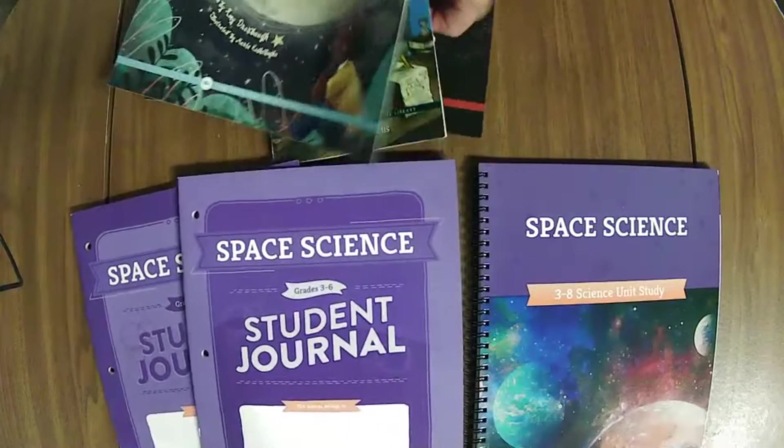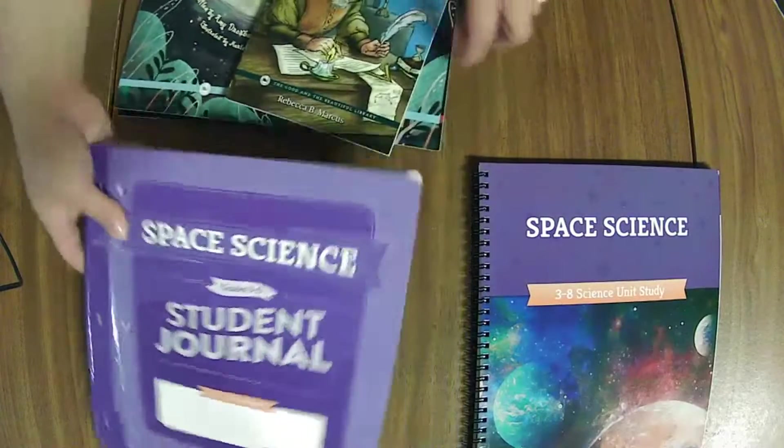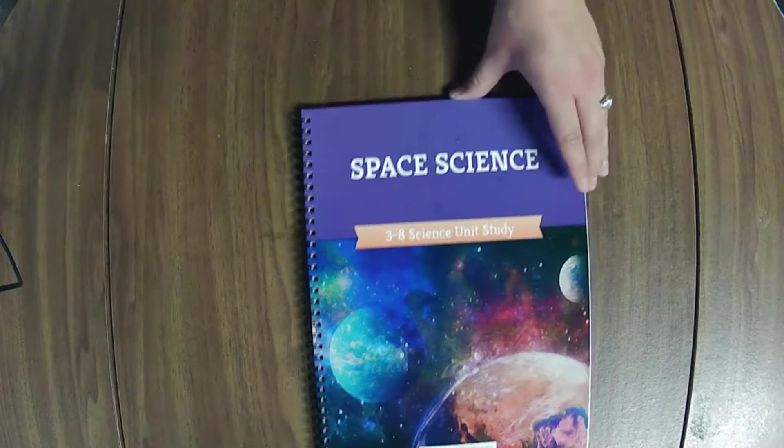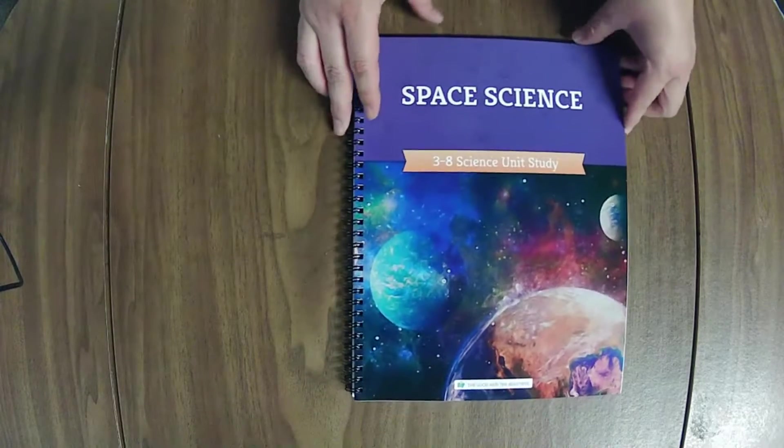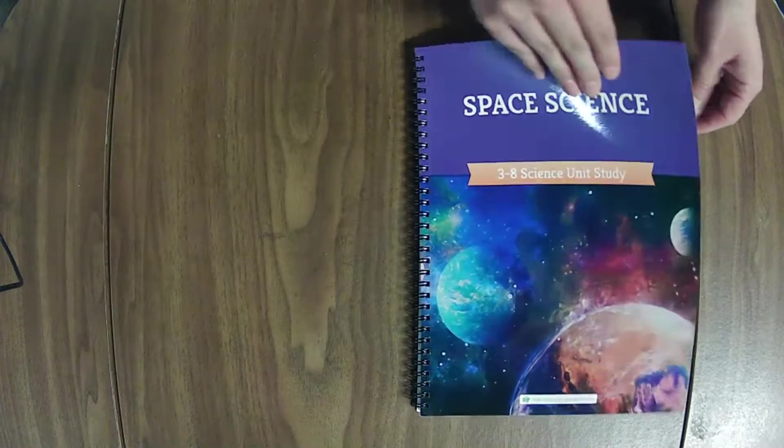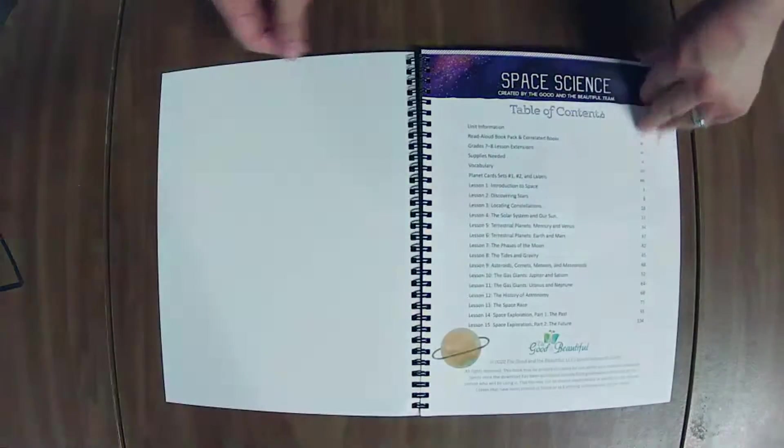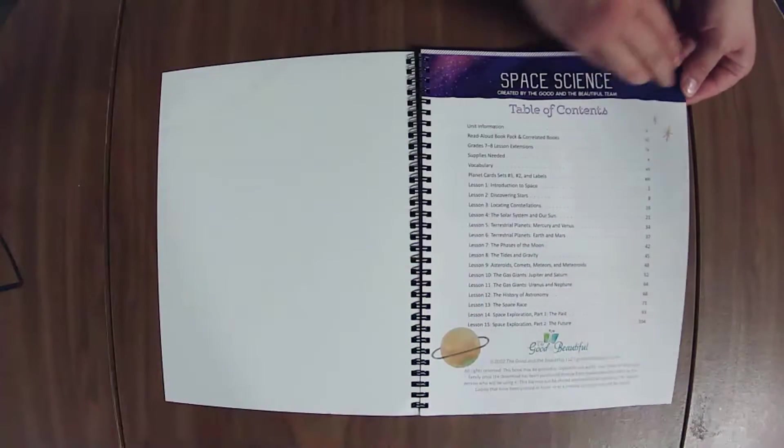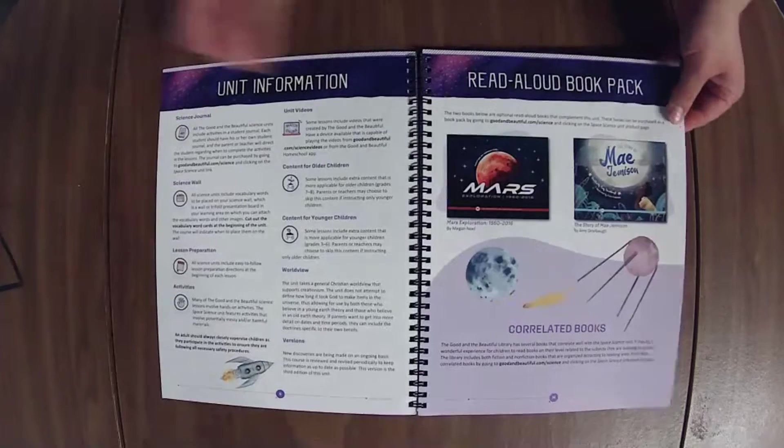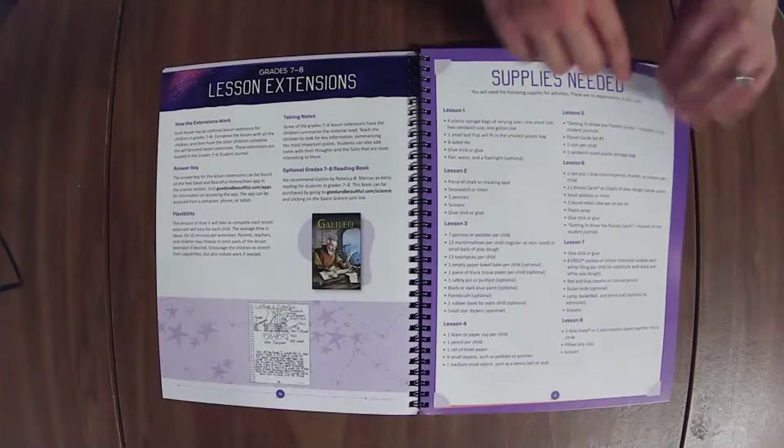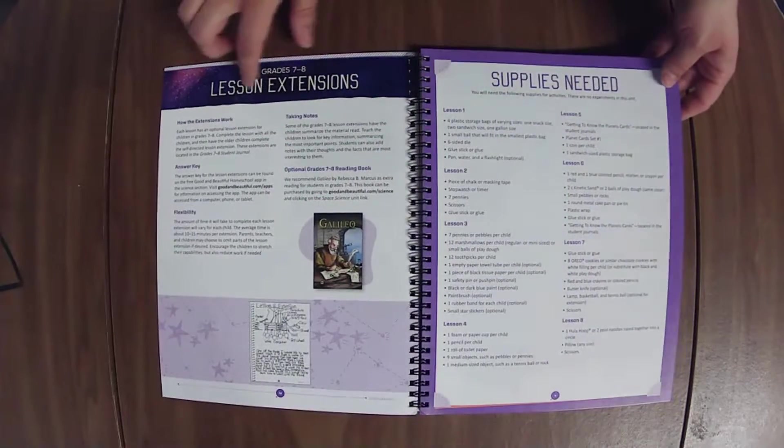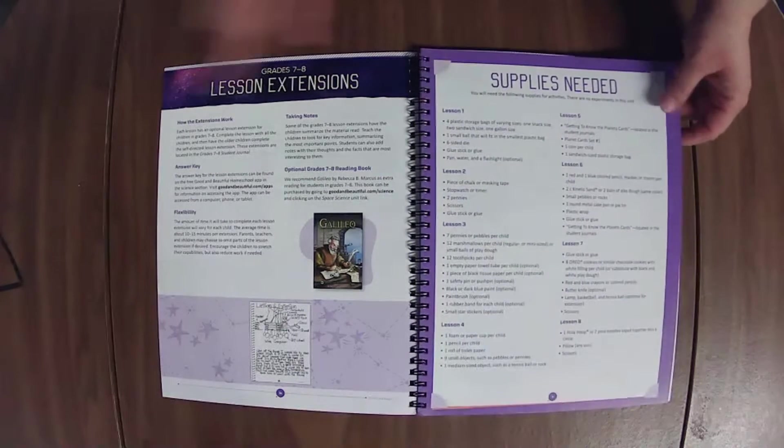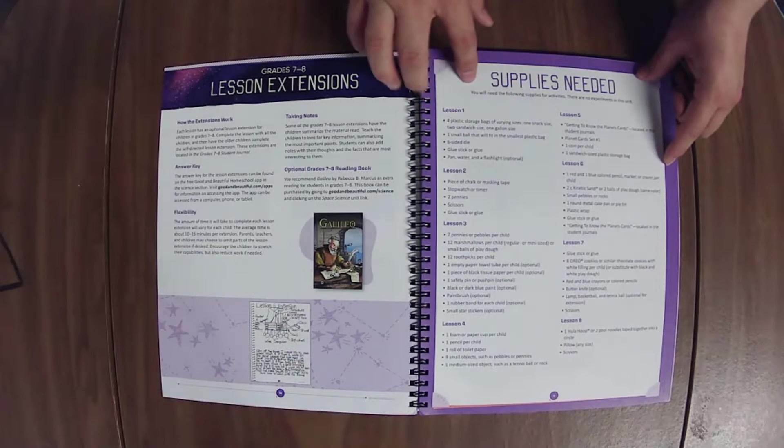So this is one that we have been excitedly waiting for. Well, at least I have. We'll see how excited my kids are. I personally love space and cannot wait to get into this one as soon as possible. This is designed for grades three through eight. There's 15 lessons. We've got the book pack and the extension book. The extension lessons are also in the older students journal.